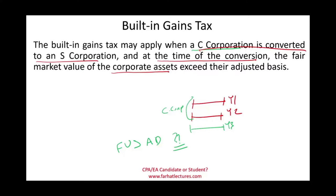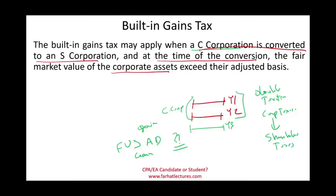Think of it this way: it's as if we sold the assets and bought them again — we would have a gain. We're not actually doing that, just transferring assets from the C into the S, but since there's a gain, we have a built-in gain. The IRS concern is this: under a C corporation you are subject to double taxation. If you sell those assets, the corporation pays taxes on the gain, then the shareholders pay taxes again.